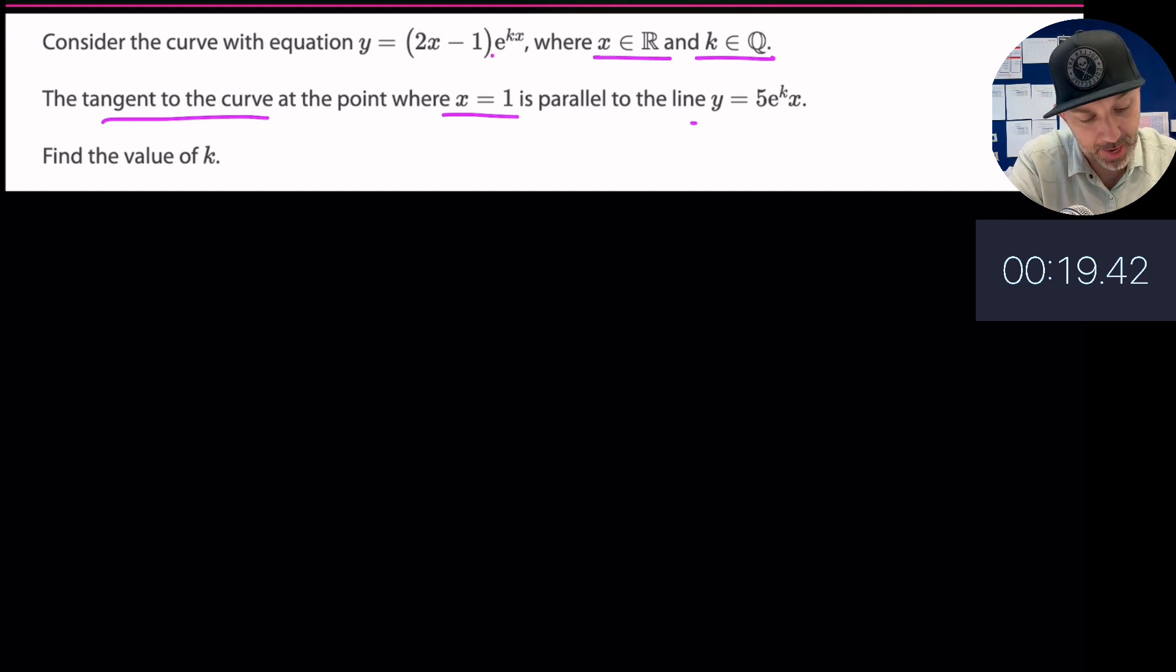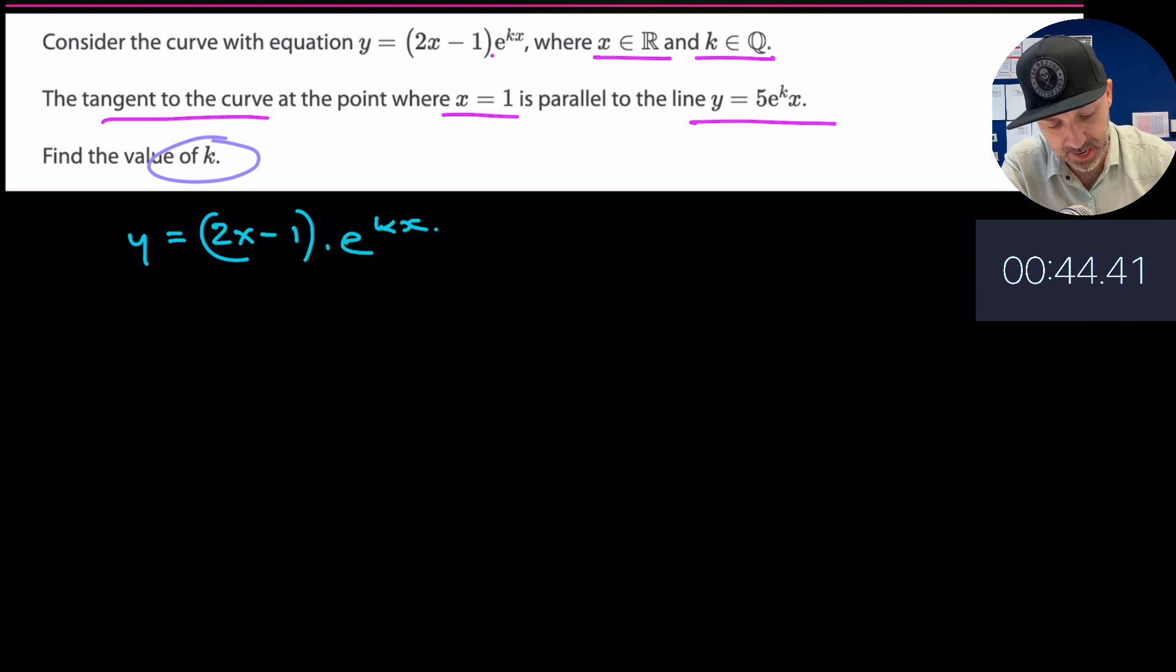It says that the tangent on this curve at the point x equals 1 is parallel to this line. Therefore, straight away I know that I'm going to have to differentiate this curve with respect to x so I get the gradient function, substitute 1 into that and find the gradient at 1. Then I'll compare it to this line. We have to find k as our overall endgame.